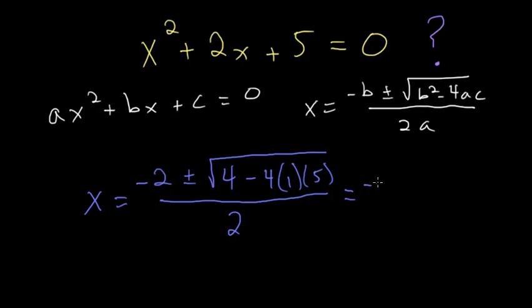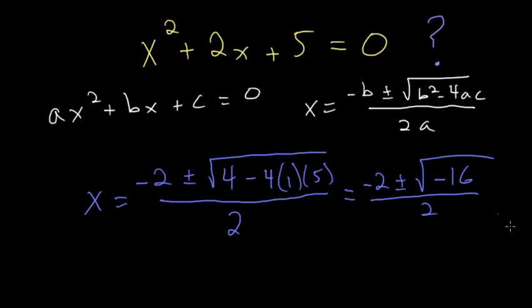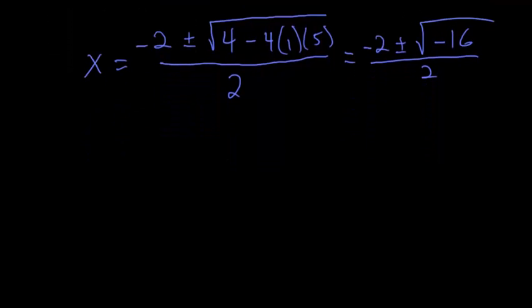Now we just have to simplify: minus 2 plus or minus the square root of 4 minus 20—here 4 times 5 is 20—which is minus 16, all divided by 2. Notice that we have a square root of a negative number.